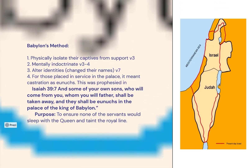Number one, they would physically isolate their captives from their home support — see verse 3. They would mentally indoctrinate them — verses 3 and 4. They would alter their identities; they even changed their names, as we'll see in verse 7.